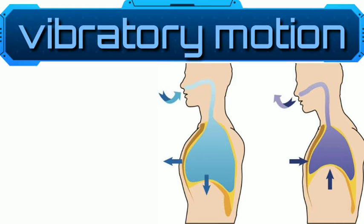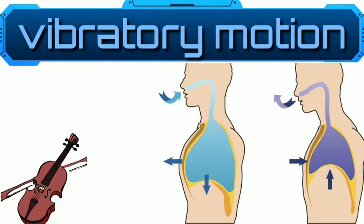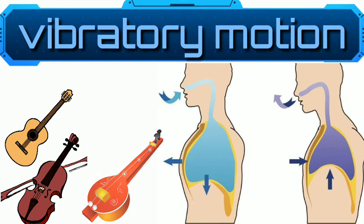Musical instruments like violin, guitar, and sitar also show vibratory motion when their strings are plucked.